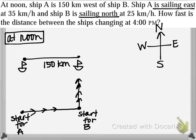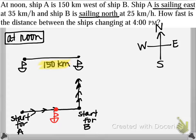We want to think about what's changing in this problem and what remains constant. The only constant is that the ships begin 150 kilometers apart. As they start moving, the distance they're traveling is going to change. The distance ship A has traveled is getting larger, so I'll give that distance a variable name: x.